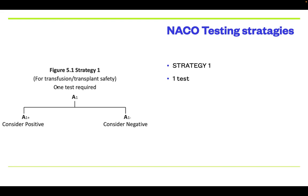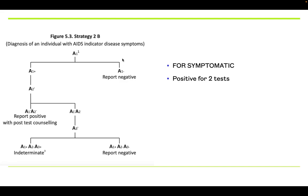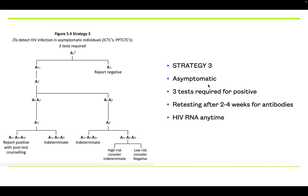In summary: Strategy 1 requires only one test for blood transfusion screening. Strategy 2A requires two tests for community surveillance using unlabeled studies. Strategy 2B is for symptomatic patients and requires two positive tests. Strategy 3 is for asymptomatic people and requires all three tests to be positive.